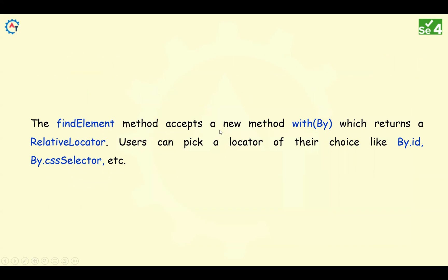The findElement method accepts a new method with(By), which returns a RelativeLocator. With the help of with(By), you can find relative locators. Users can pick a locator of their choice like By.id, By.cssSelector, etc. We will see exactly how this works with the help of an example.